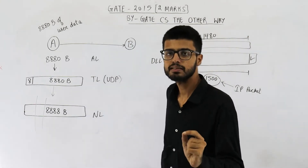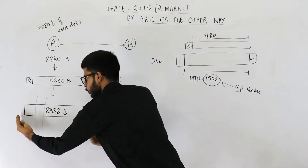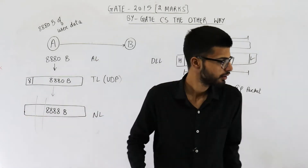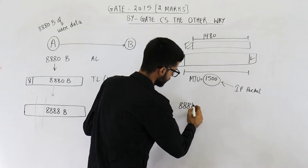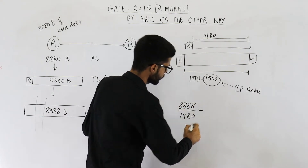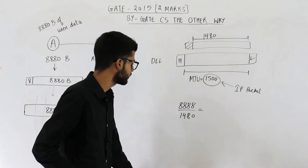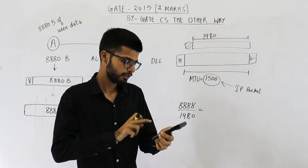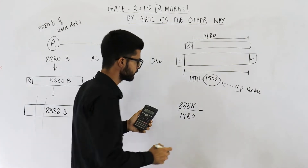The question is how many fragments will be formed. That will be total size divided by size of one fragment. So 8888 divided by 1480. Using a calculator, this comes out to be 6.005.